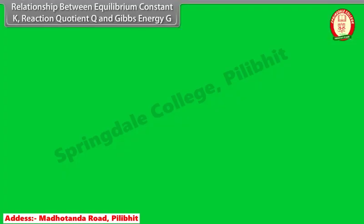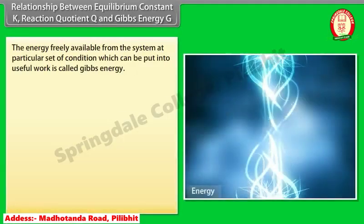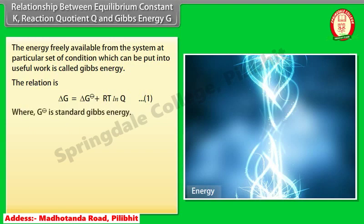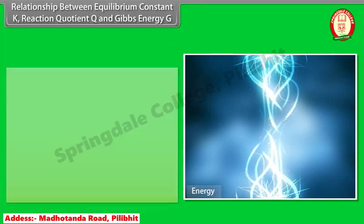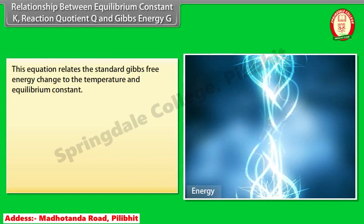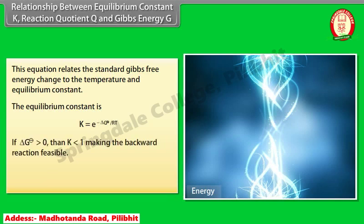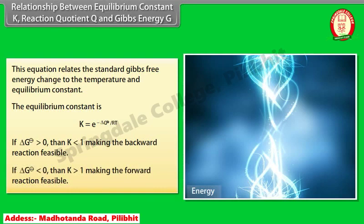Relationship between equilibrium constant K, reaction quotient Q, and Gibbs energy G. The energy freely available from the system at a particular set of conditions that can be put into useful work is called Gibbs energy. At equilibrium, Q = K and ΔG = 0. This gives the relation between standard Gibbs free energy and the equilibrium constant. If ΔG° > 0, then K < 1, making the backward reaction feasible. If ΔG° < 0, then K > 1, making the forward reaction feasible.